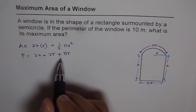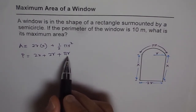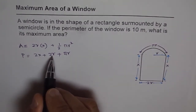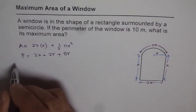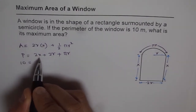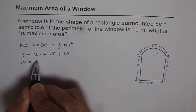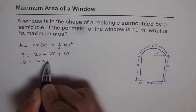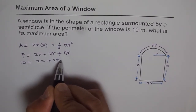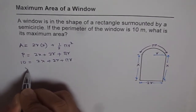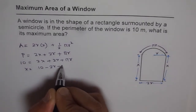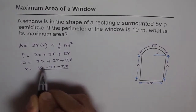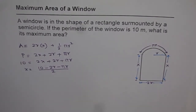From this perimeter equation, we get a relation between x and r. We substitute P = 10, giving 10 = 2x + 2r + π r. Solving for x, we get x = (10 − 2r − π r) / 2. That is the value of x in terms of r.